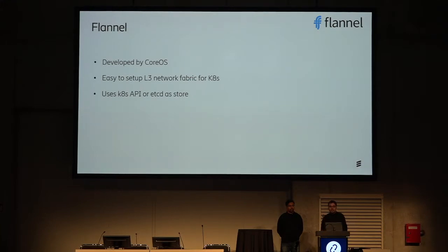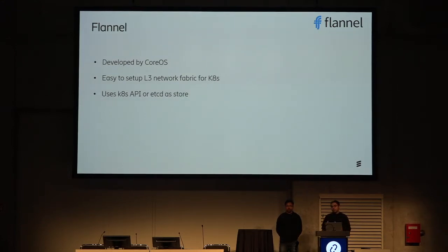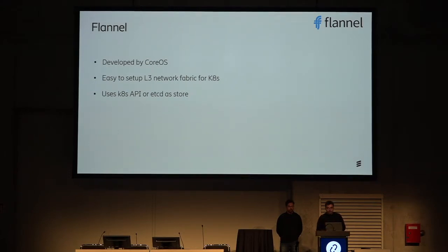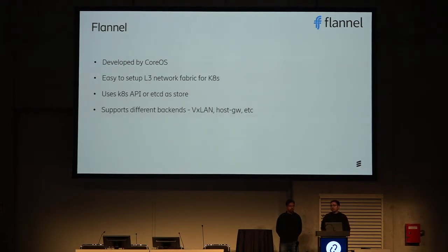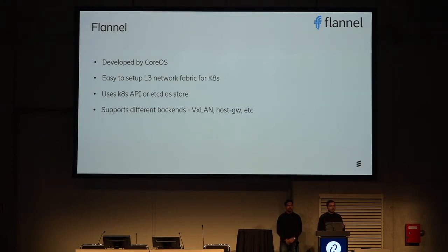Flannel uses etcd as a store for retrieving network information. It can also directly talk to the Kubernetes API server and should not need etcd separately just for Flannel. It uses a daemon process on each node which looks up Flannel configuration settings, sets up the Flannel network, and routes packets per configuration. Flannel supports different backends: VXLAN is the most recommended due to high performance. There's also host gateway and UDP, though UDP is suggested mostly for debugging and not production. Some cloud provider backends like AWS, GCE, or AliVPC are in experimental phase. Flannel does not support network policy.